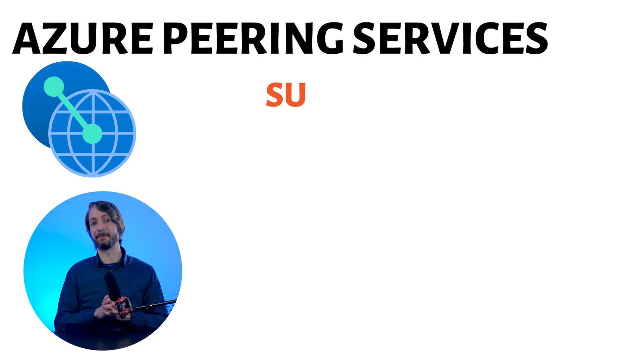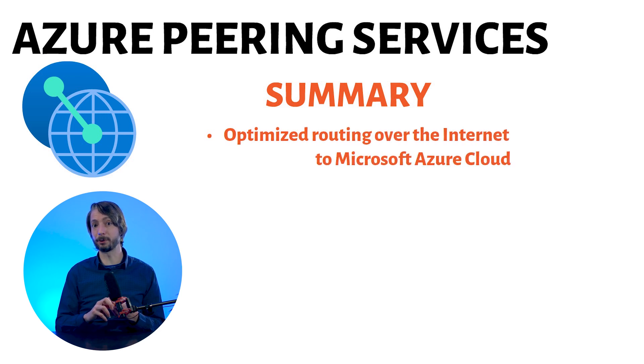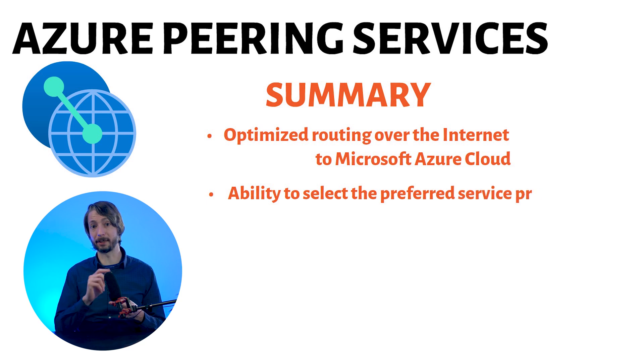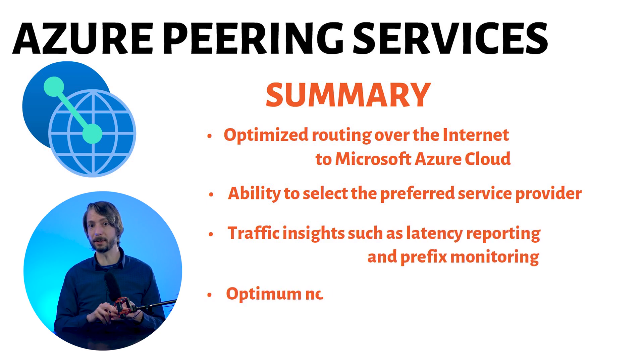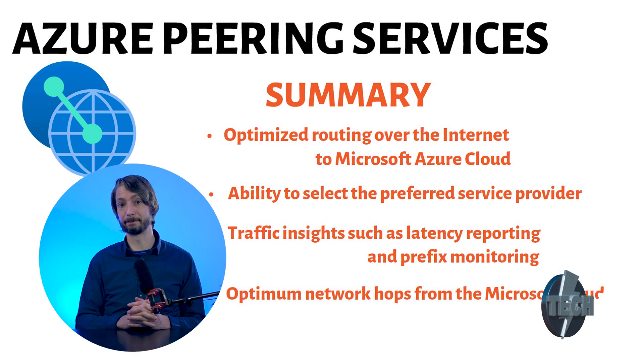Let's summarize the benefits of this service. You can use the best public routing over the internet to the Microsoft Azure cloud services for optimal performance and reliability. You have the ability to select the preferred service partner to connect to the Microsoft cloud. You have traffic insights such as latency reporting and prefix monitoring. Optimum network hops from the Microsoft cloud is something you define. Remember the concept: holding a hot potato — you want to deliver it and get rid of it as soon as possible. A cold potato, on the other hand, you can keep in your hand until you almost reach the destination. In Azure, you set up an Azure Peering Service to optimize the routing over the internet to the different public services.